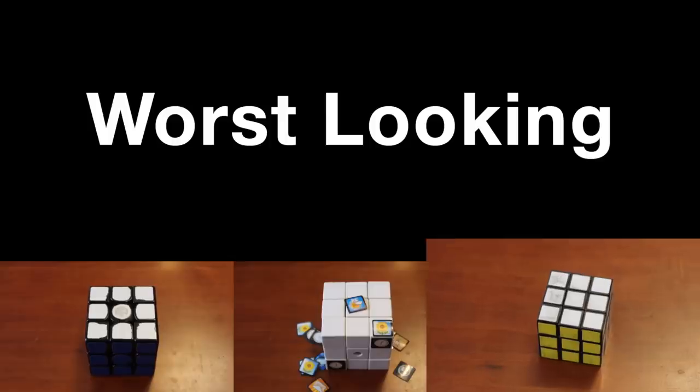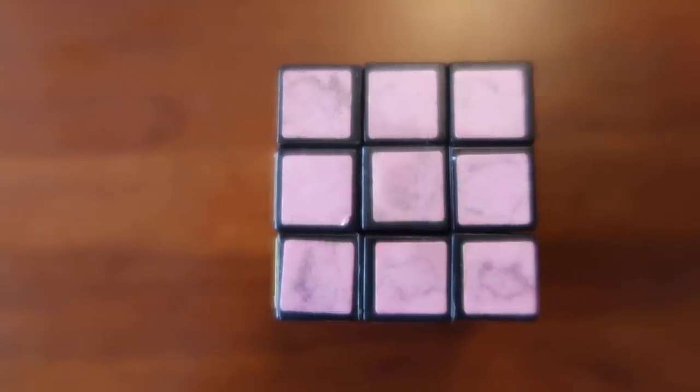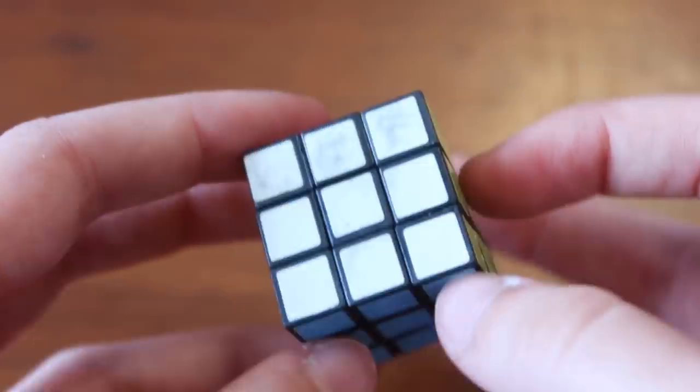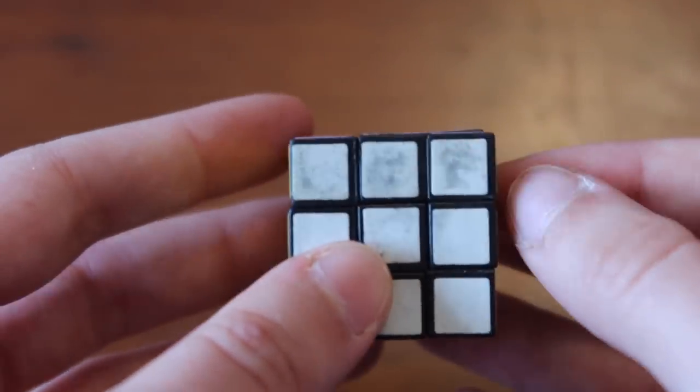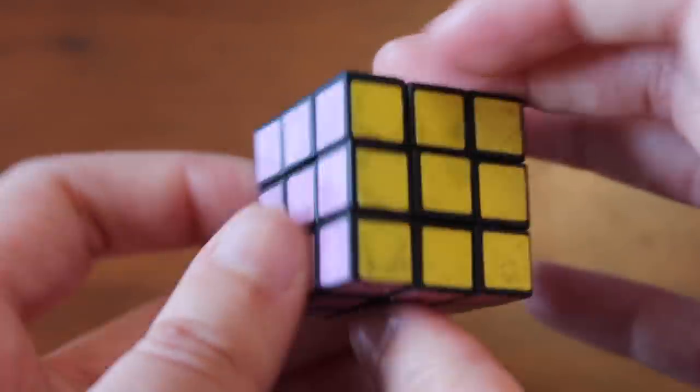And finally we have this mini dollar store 3x3. I've barely ever touched this cube so I don't even know what happened, but the stickers I think they just wore away because now they look like there's black spots on all of them and they just look really bad. It almost looks really dirty even though it's not.